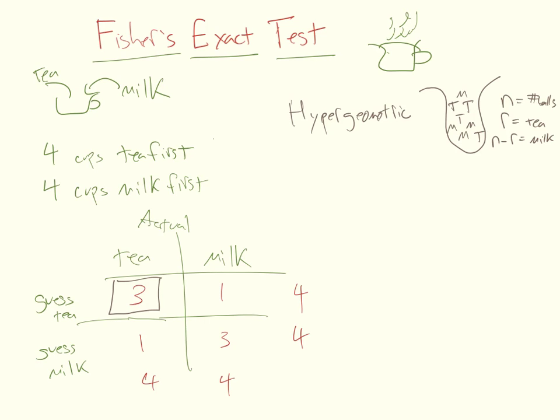Now, imagine somebody is just randomly digging around in there, and they grab m balls, so m's going to be the number grabbed up. Now, n, r, and m define the hypergeometric distribution, and the random variable is going to be the number of t balls that are grabbed.